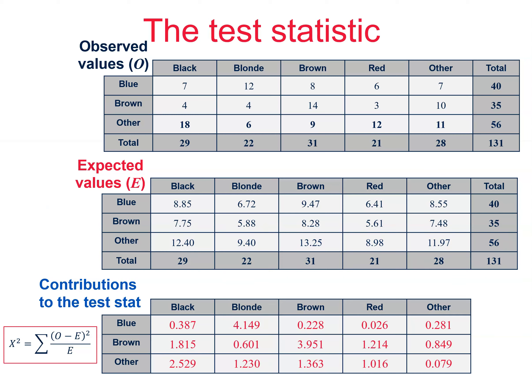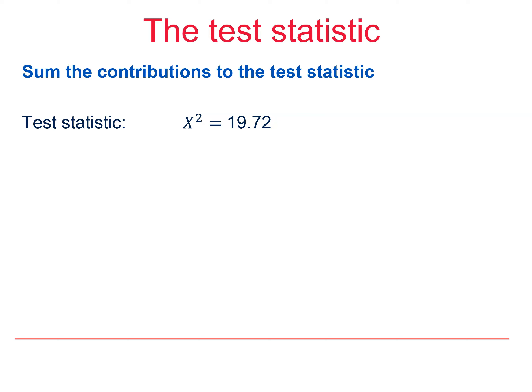Now we add up all of the values in this table to get our test statistic x squared, which is 19.72 to 2 decimal places. Your test statistic should be given to 2 decimal places to match the tables.